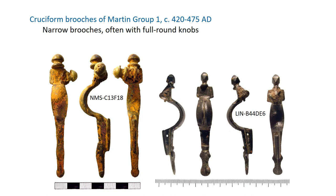Group one cruciform brooches are small, simple and narrow, mostly with full round knobs. The head plates are small and narrow — no wider than the bow — with tiny little wings. They have full round knobs usually made separately, so these are generally missing from finds we see. The bows are highly arched and the catch plates are deep. They can be dated to the first half of the 5th century, from around 420 to 475 AD.